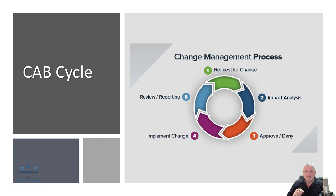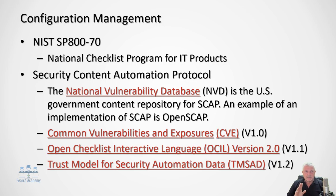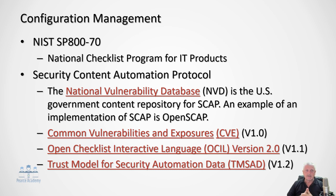Configuration management is also a big concern. The NIST document SP 800-70 — the National Checklist Program for IT Products — is recommended. There is SCAP, the Security Content Automation Protocol, with several versions. The National Vulnerability Database is the US government content repository for SCAP. OpenSCAP is available as an open source project. The Common Vulnerability and Exposure (CVE) database was defined in SCAP version 1; the Open Checklist Interactive Language (OCIL) version 2 in SCAP 1.1; and the Trust Model for Security Automation Data (TMSAD) in SCAP 1.2.